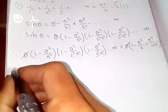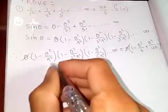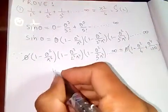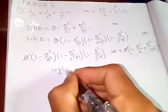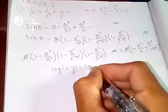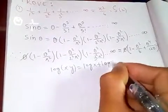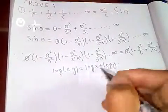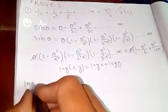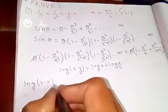Now taking the logarithm on both sides. We use the property that log(x·y) = log x + log y.